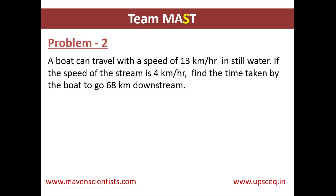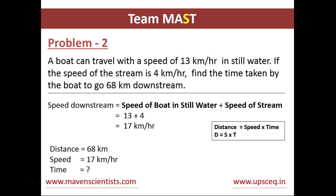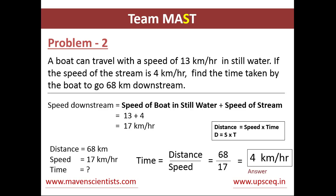Let's see problem two. A boat can travel with a speed of 13 kilometers per hour in still water. If the speed of the stream is 4 kilometers per hour, find the time taken by the boat to go 68 kilometers downstream. The speed downstream equals 13 plus 4, which equals 17 kilometers per hour. The distance is 68 kilometers. Using distance equals speed into time, we get time equals 68 divided by 17, which equals 4 hours.